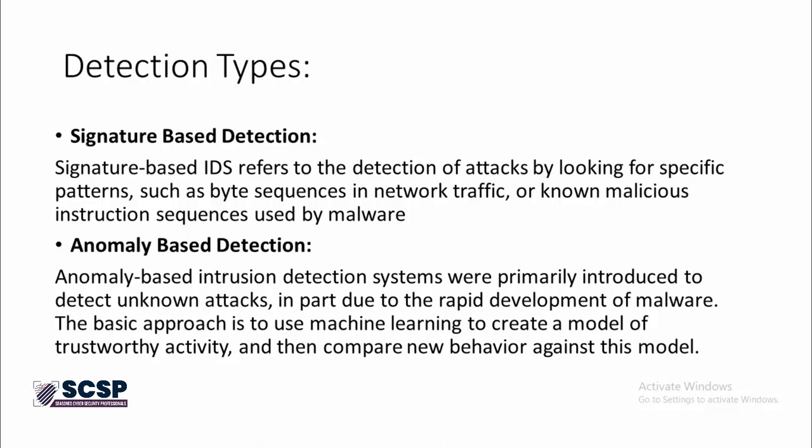Anomaly-based detection is a bit different from signature-based detection because it uses machine learning models, and based on those models it predicts whether certain traffic is malicious or not. Anomaly-based detection can detect malicious traffic that would not have been defined before, but it also has a chance of false positives. That's the difference between signature-based and anomaly-based detection.